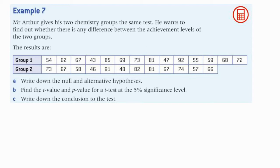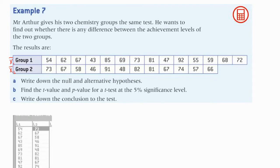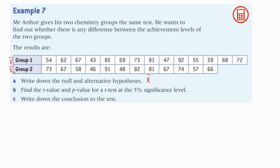Write down the null and alternative hypothesis. We'll call the first average x̄₁ and the second x̄₂. The null hypothesis says the two averages are equal — even though we'll be able to see they're not exactly the same, they are statistically equal. The alternative, since he said any difference, is a two-tailed test, so we say they are not equal in some way.